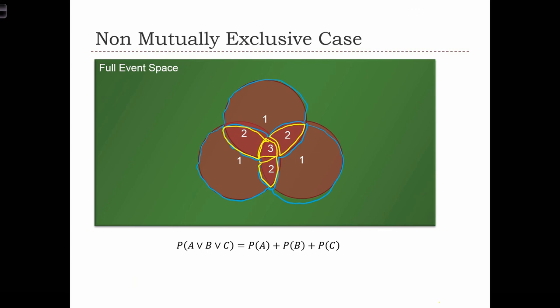So you can see that if we ignore the fact that these are not mutually exclusive, and we just use the simple addition rule, we're going to overestimate our sum of probabilities. We're going to overestimate the probability of this occurring because we're double-counting these areas and triple-counting that center spot. So what we have to do instead is remove those double-countings, or triple-countings, from our sum.